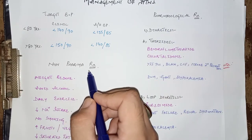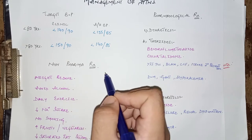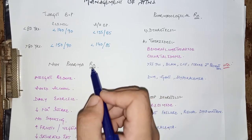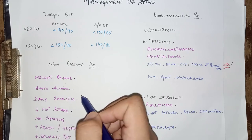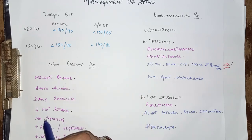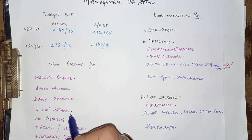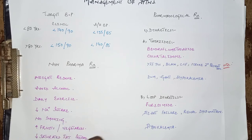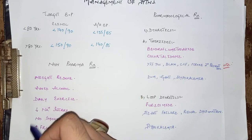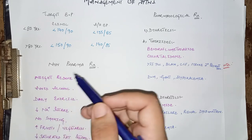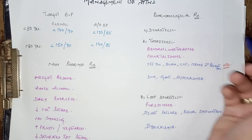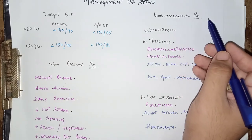Management consists of non-pharmacological treatment and pharmacological treatment. The non-pharmacological treatment is basically to reduce risk factors, which includes reduction of weight, avoid alcohol, regular exercise, reduce salt intake, avoid smoking, and increase intake of fruits and vegetables and a low-fat diet.